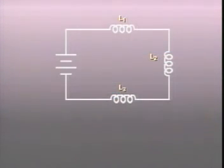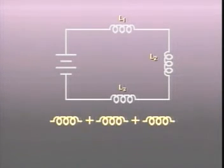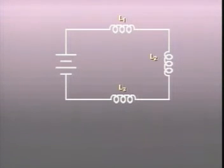Just as with voltage sources and resistors, when inductors are connected in series, their inductances are additive. The formula expressing this is L sub t equals L sub 1 plus L sub 2 and so on for the total number of series inductors.